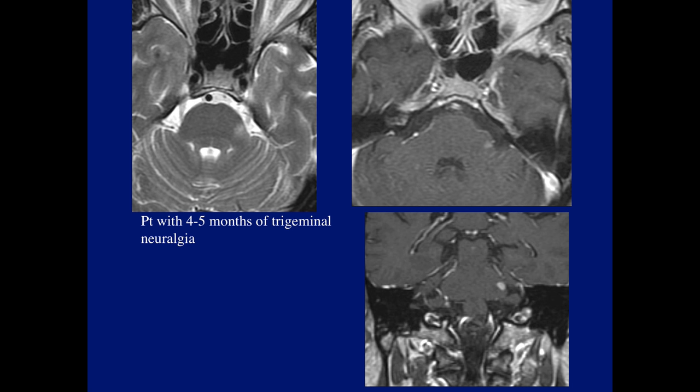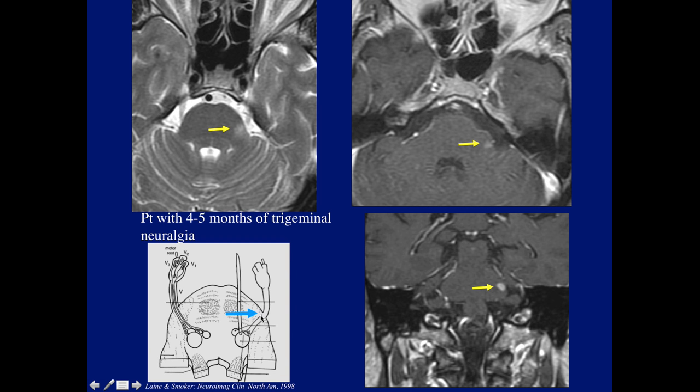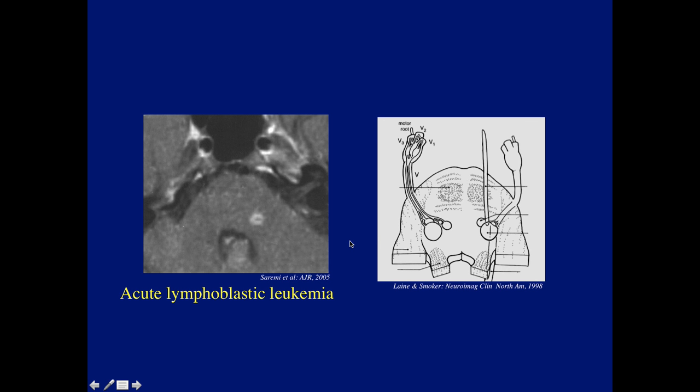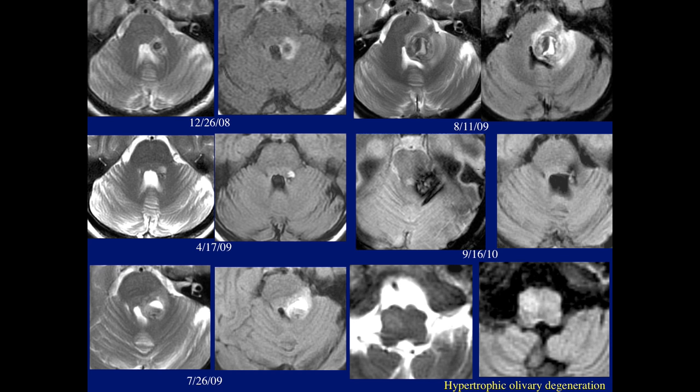Here's another patient who had four or five months of trigeminal neuralgia — again, notice the lesion in the region of the root entry zone of the trigeminal nerve. And here's a patient who had acute lymphocytic leukemia, again with involvement of the trigeminal nucleus region in the pons.